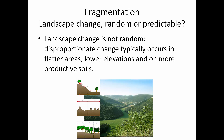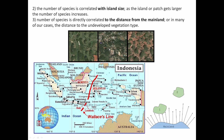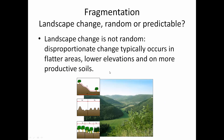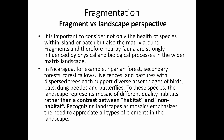Landscape fragmentation and landscape change is not random. It may look so, but it's actually pretty predictable. Most landscape change and the greatest amount of fragmentation typically occurs in flatter areas, lower elevations, and areas of more productive soil — common sense when you think about it. It's important not only to consider the health of species within the island, but also the matrix around it.